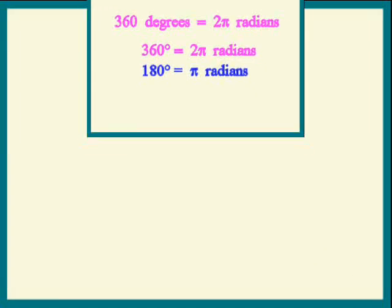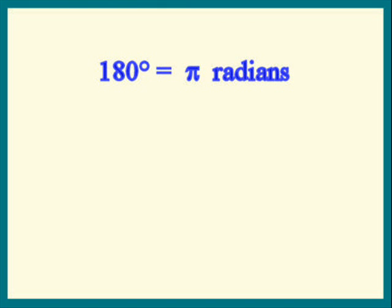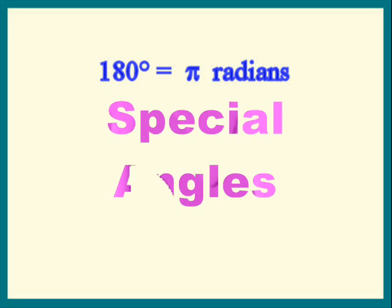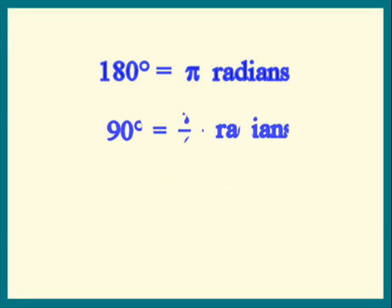Let's use this to find a few special angles. These special angles are used a lot. So even though it's very obvious to derive, we usually memorize them. Divide each side by 2. We find that 90 degrees is pi over 2 radians.